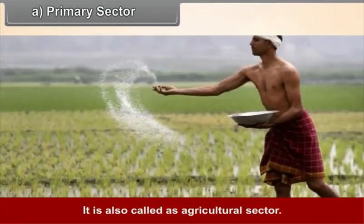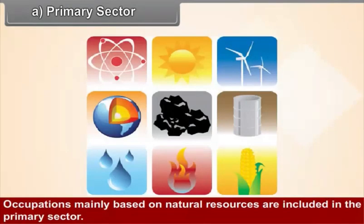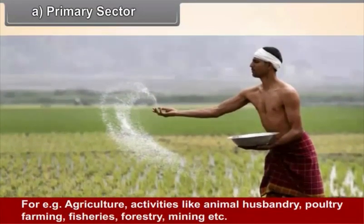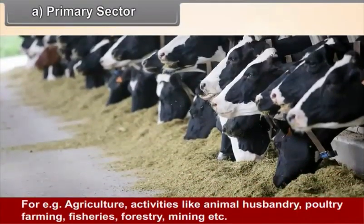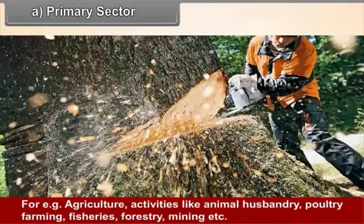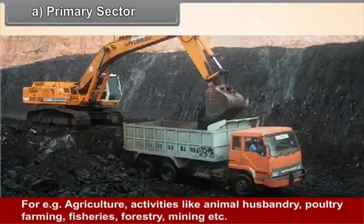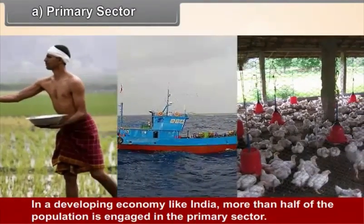A. Primary Sector. It is also called the agricultural sector. Occupations mainly based on natural resources are included in the primary sector. For example, agriculture, animal husbandry, poultry farming, fisheries, forestry, mining, etc. In a developing economy like India, more than half of the population is engaged in the primary sector.